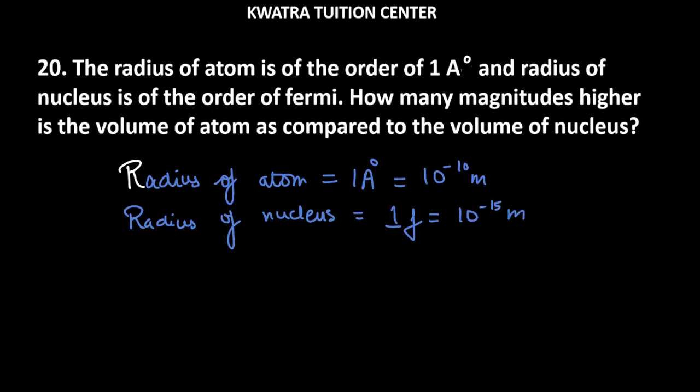Now, what do we need to do? We need to find both volumes. So basically, we need to find volume of atom over volume of nucleus. So how much is the volume of atom? It is 10 raised to power minus 10 cube. And how much is the volume of nucleus? 10 raised to power minus 15 cube.